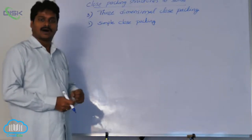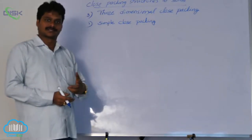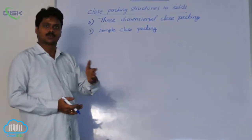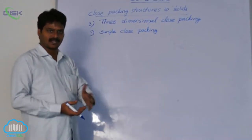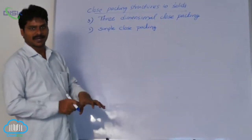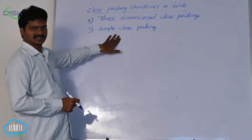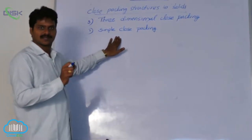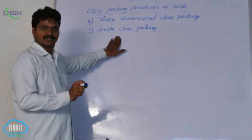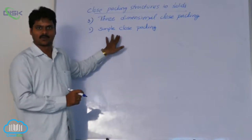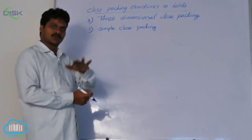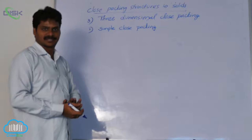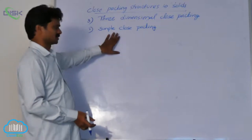You know, all solid structures are three-dimensional. One-dimensional and two-dimensional structures were discussed earlier only to understand the three-dimensional structures. Really, solids have three-dimensional structures; the one-dimensional and two-dimensional cases we discussed earlier are only to help understand the three-dimensional.